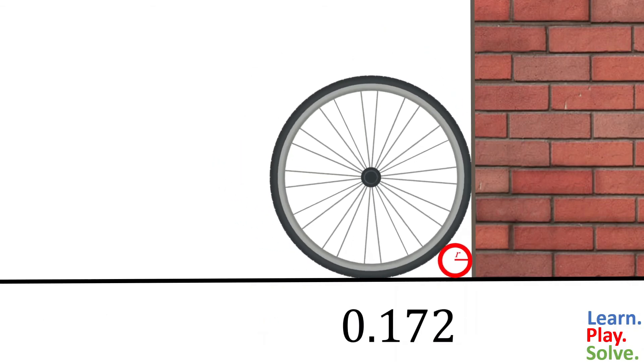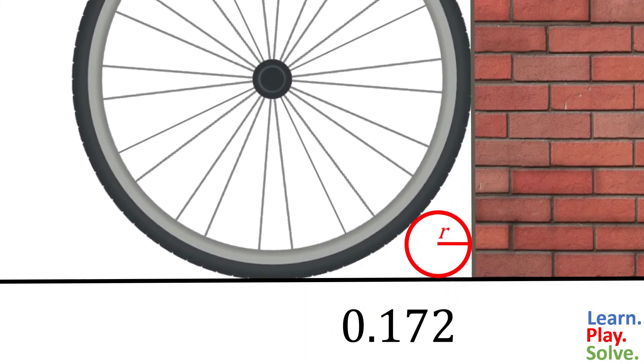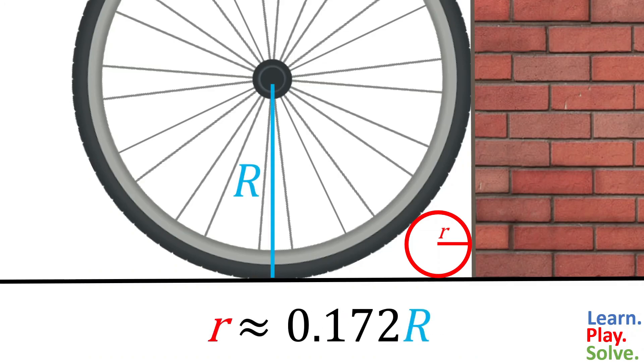You can use this no matter how big or small the tire, whatever the units, even if it's not exactly 1, by simply multiplying its radius by 0.172.